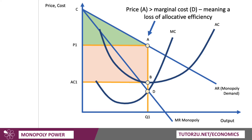Crucially, the price the monopoly is charging, P1, is well above the marginal cost of supply shown by point D. This is one big aspect of monopoly power — they can charge a very high price, in theory, well above the actual marginal cost of supplying the good to the consumer. If you think about examples: high energy prices, or the cost of expensive branded fashion items — often with those, you're paying for the brand, and the price you're paying is well above the actual supply cost. If price is above marginal cost, this leads to a loss of allocative efficiency.